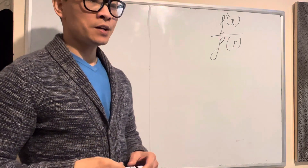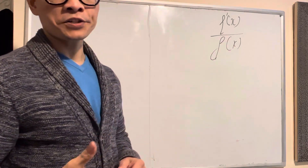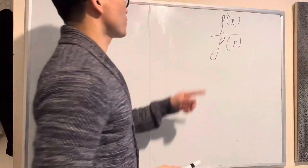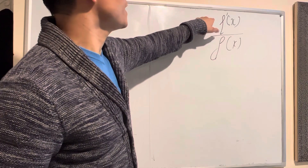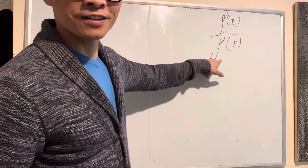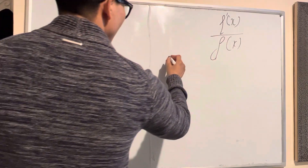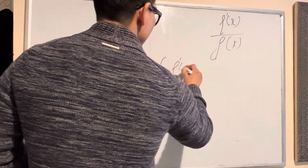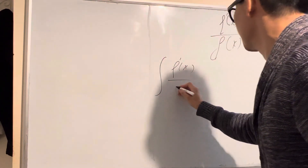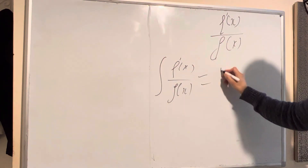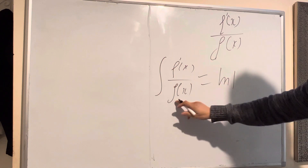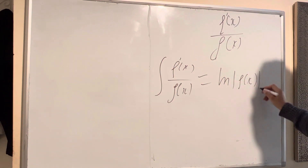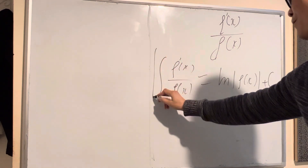Hi guys, today I will show you another one about formula integration. If you have a function where the numerator is the derivative of the denominator, then the integration of this fraction will give you ln of the denominator. That's the formula.